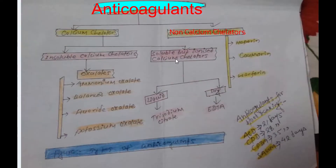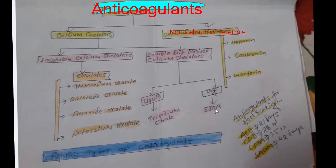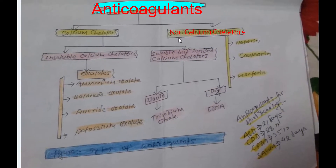Soluble but ionized calcium chelators are further subdivided into two parts: liquid form and dry form. The liquid form is trisodium citrate, whereas the dry form is ethylene diamine tetra-acetic acid, in brief EDTA. Non-calcium chelators include heparin, coumarin, and warfarin.